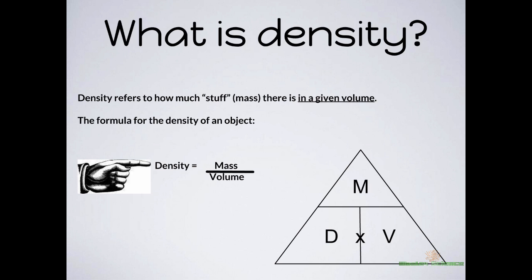Very simple. Density refers to how much stuff there is in any given volume. It's a simple ratio — all you do to figure out density is take the mass of the object and divide it by the volume of the object. On the bottom right side here, we have the triangle method for calculating density, mass, or volume if you are given the other two. I'm going to show you a couple of examples of that right now.